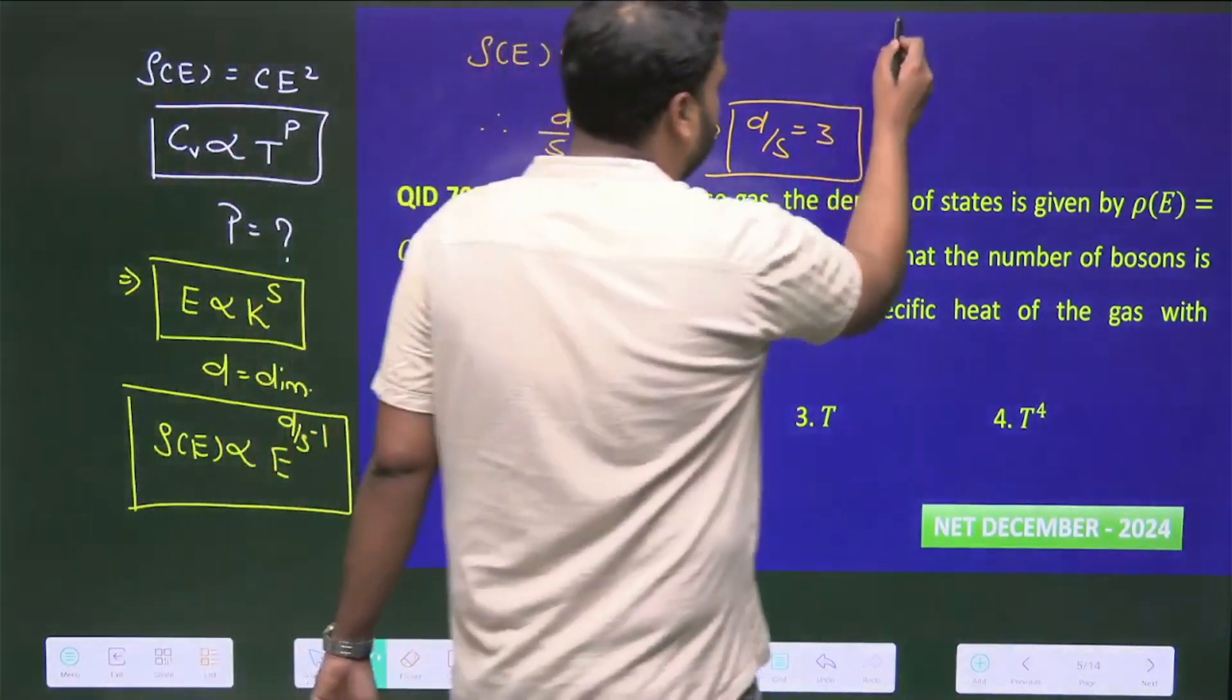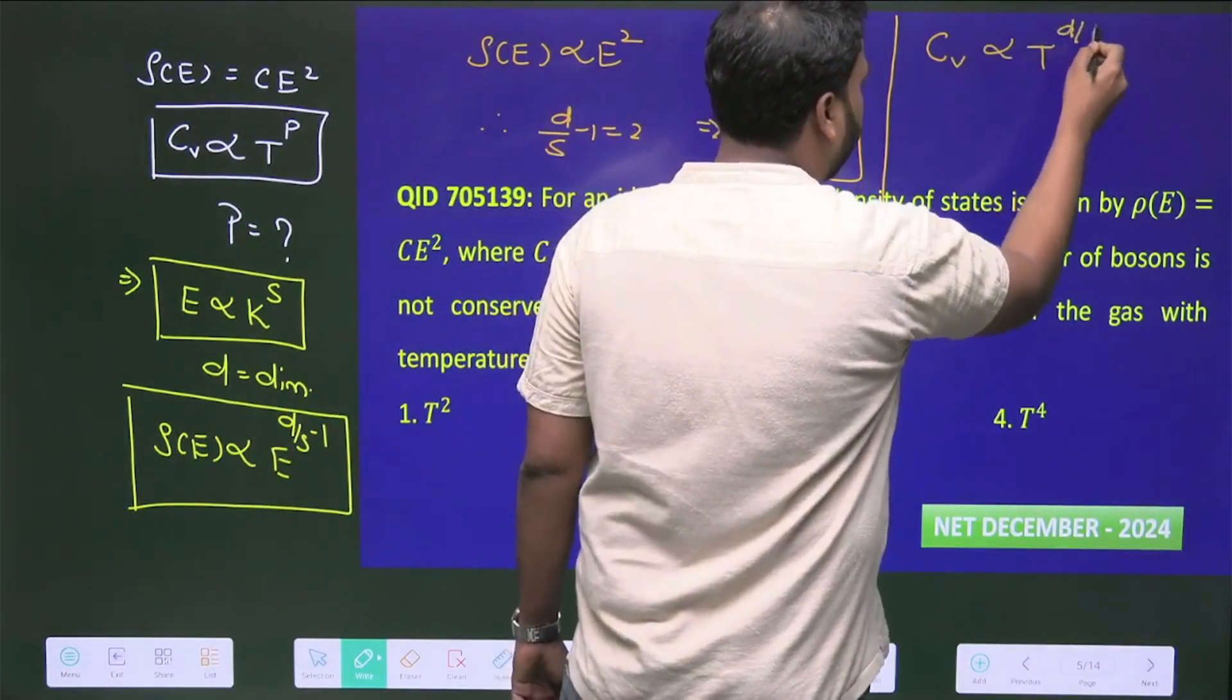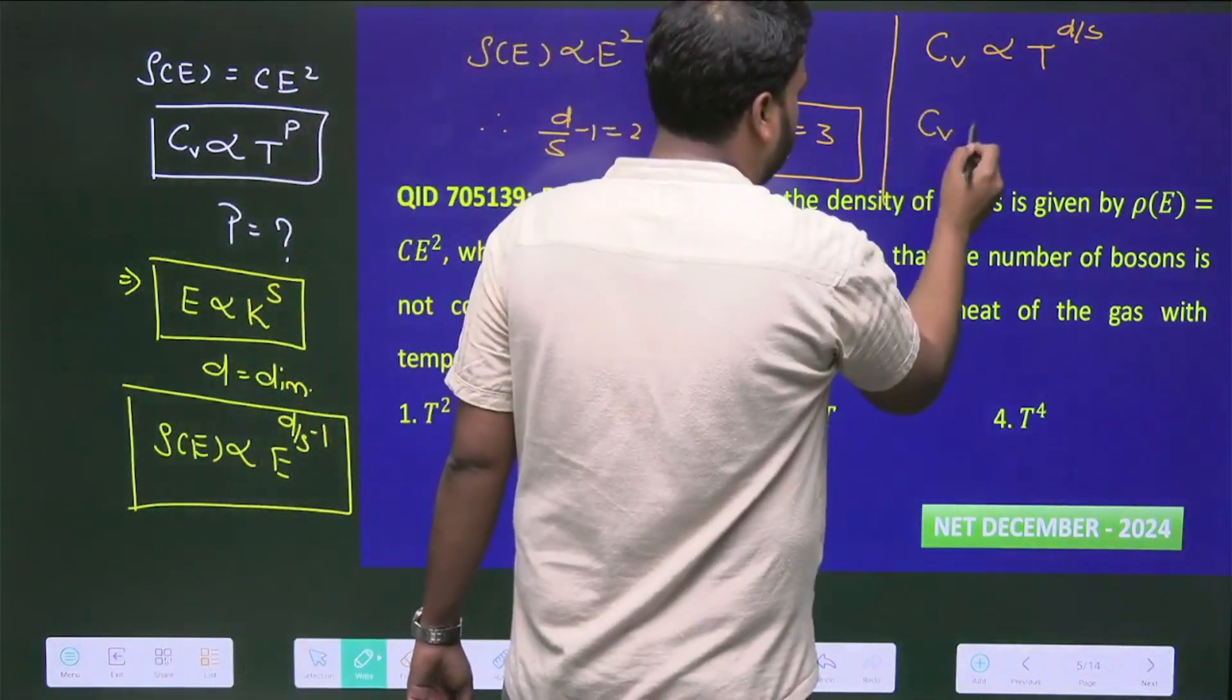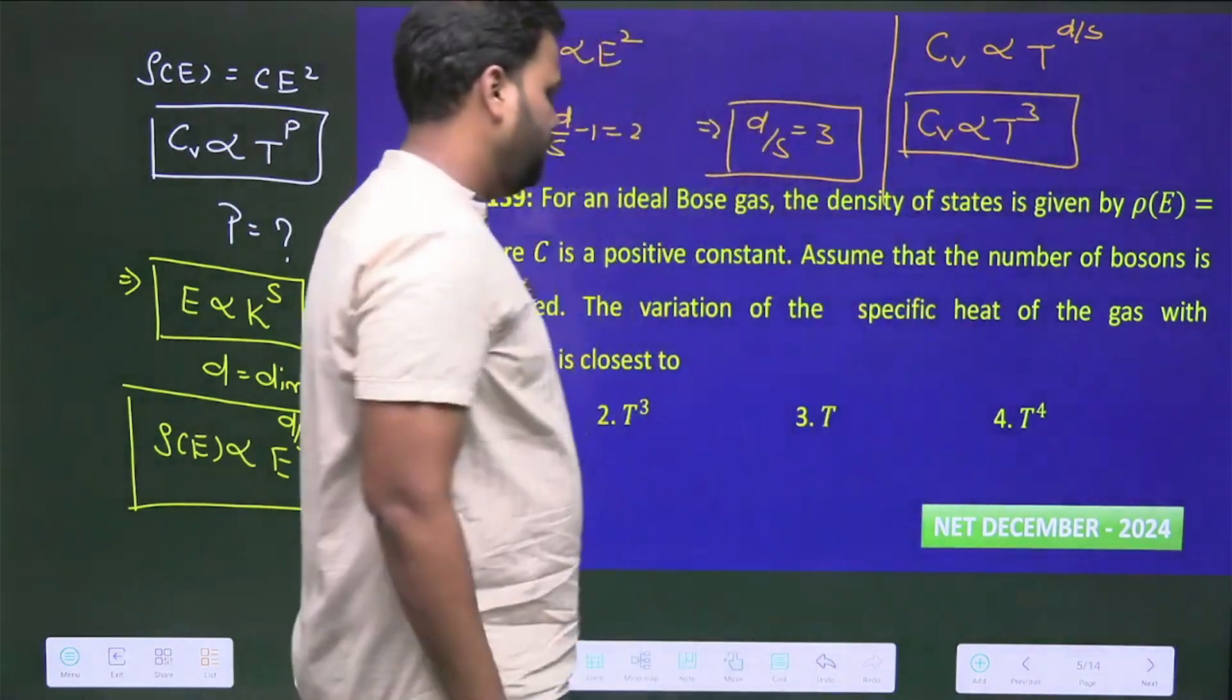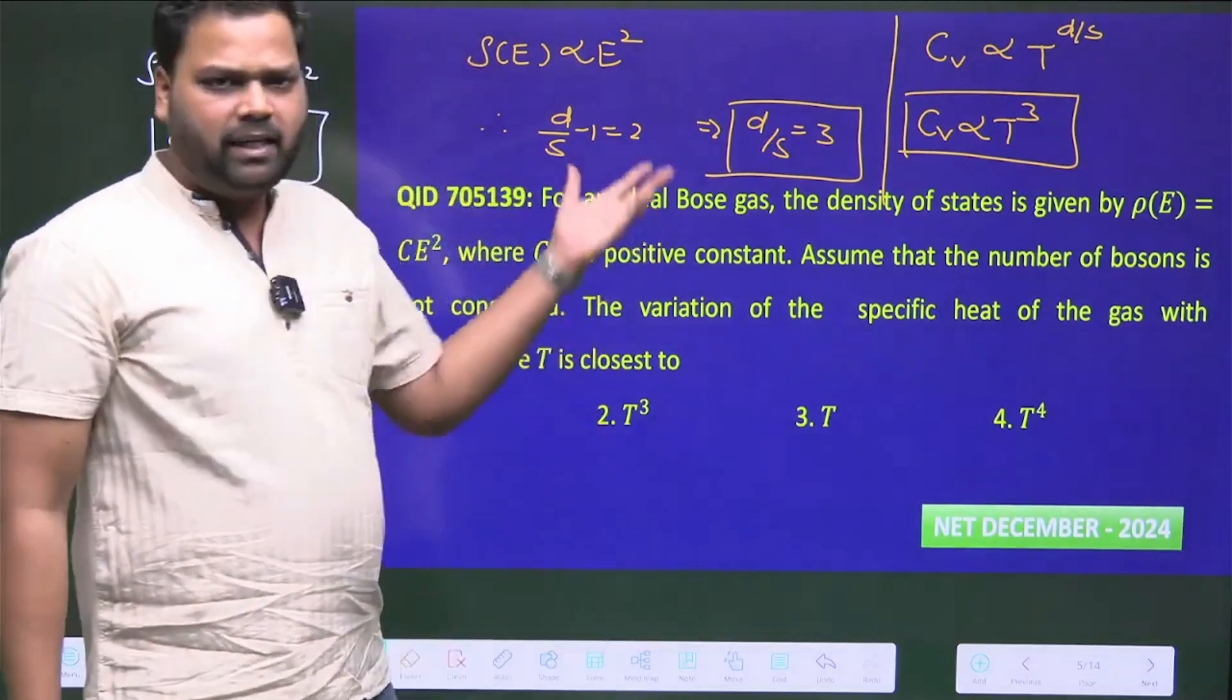One more thing: Cv, the specific heat, is proportional to T to the power D/S. Put the value and so Cv will be proportional to T³. This is your answer, so option two is correct.